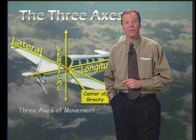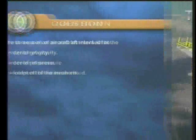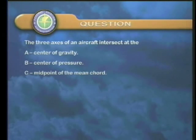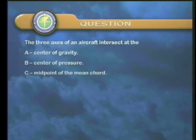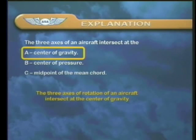It's time now for our first FAA test question. The three axes of an aircraft intersect at the: A) center of gravity, B) center of pressure, or C) midpoint of the mean chord. Your answer: center of gravity.